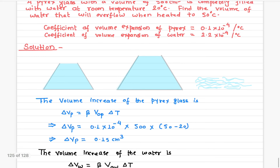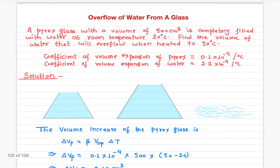This is a simple calculation; all you need to remember is the coefficient of volume expansion. If the Pyrex glass and the water had exactly the same coefficient of volume expansion, the water would not have overflowed because both would have expanded equally. It is the difference in the coefficients of volume expansion that results in overflow.